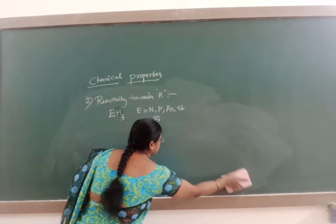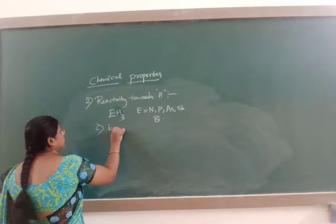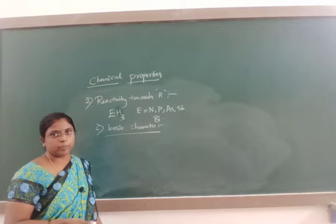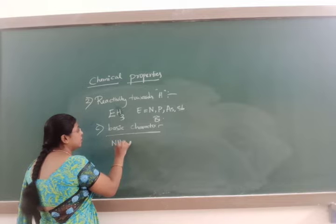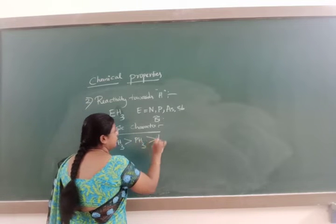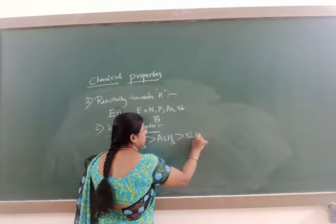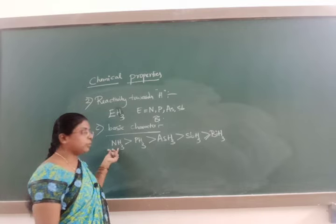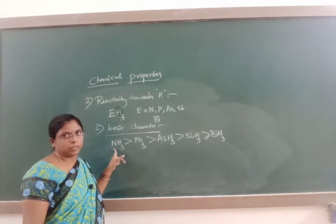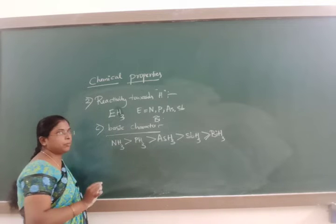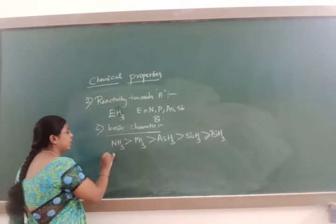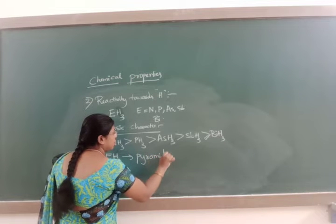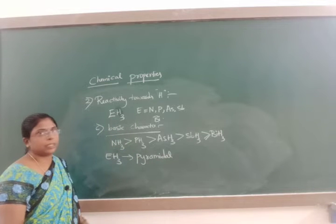The third property is basic character, or basicity. Basic character means it is a tendency to donate the lone pair of electrons. The tendency to donate lone pair of electrons decreases from NH3 to BiH3. SbH3 and BiH3 are almost the same here. All these hydrides EH3 are having a pyramidal structure. This is regarding the reactivity towards hydrogen.